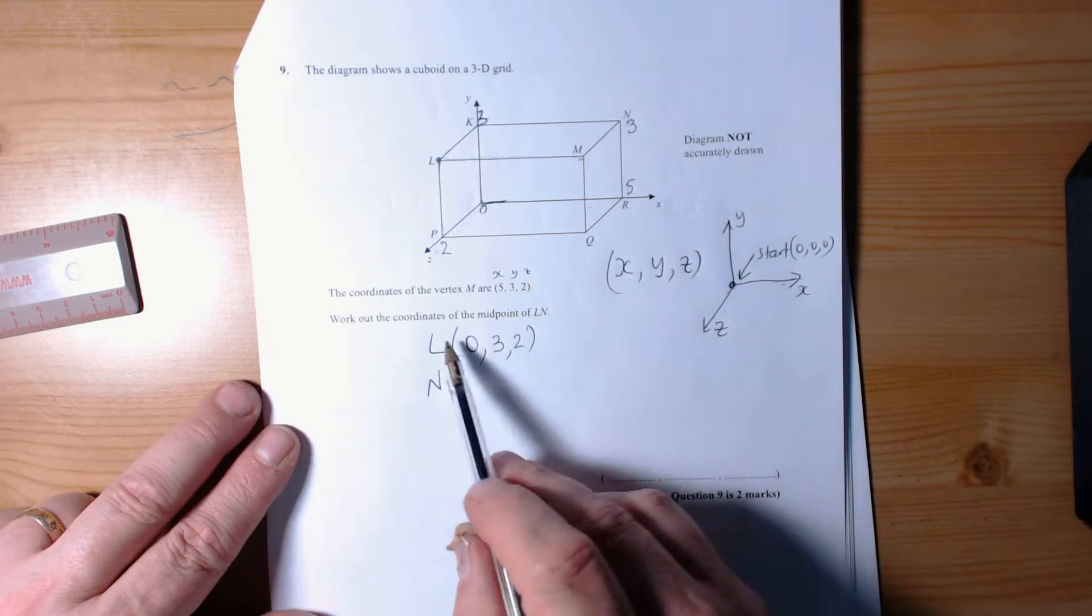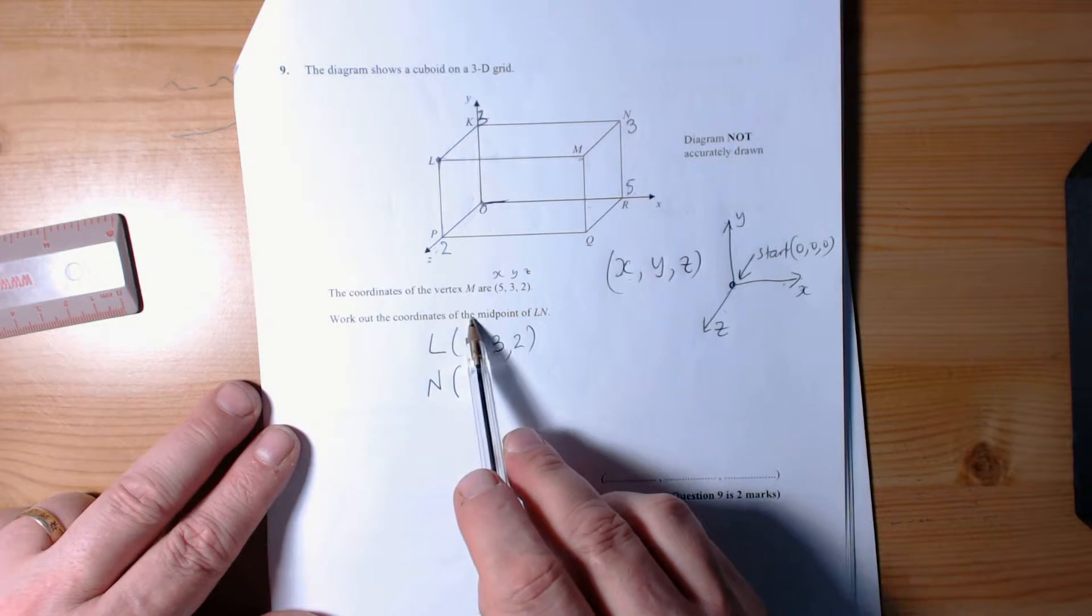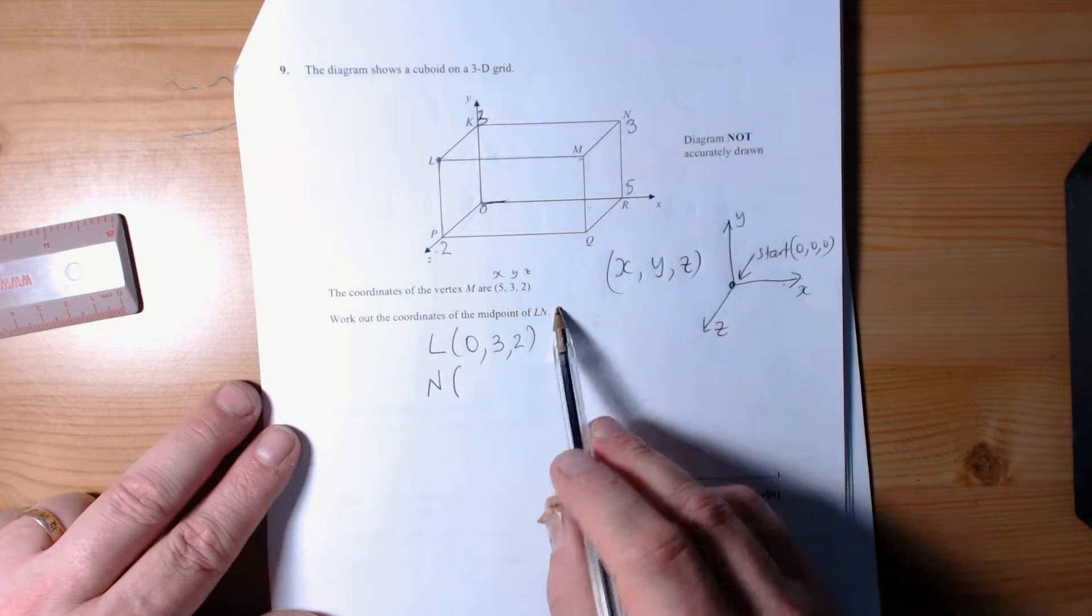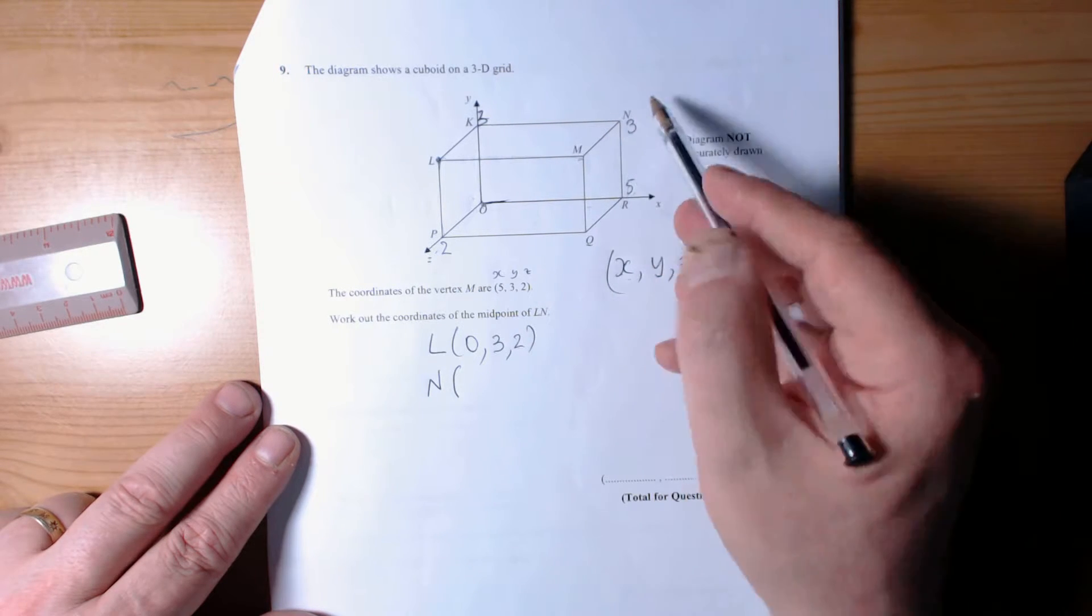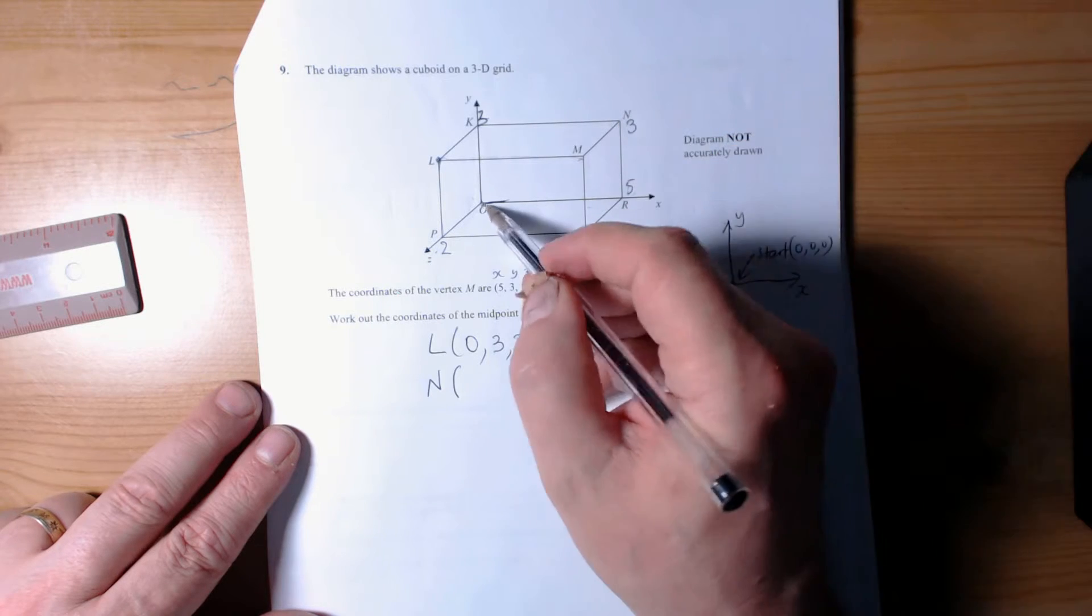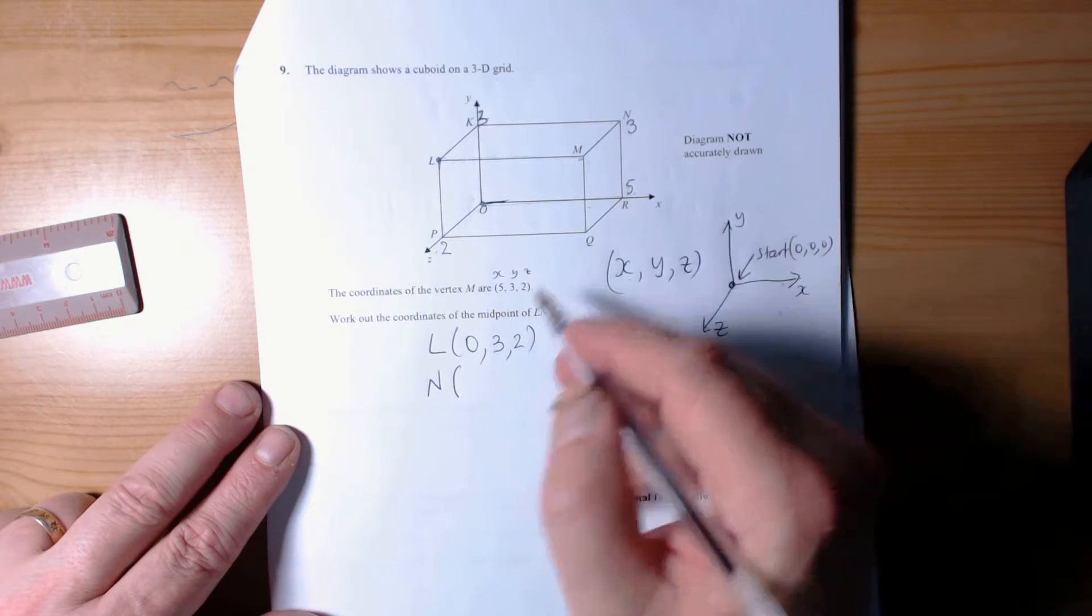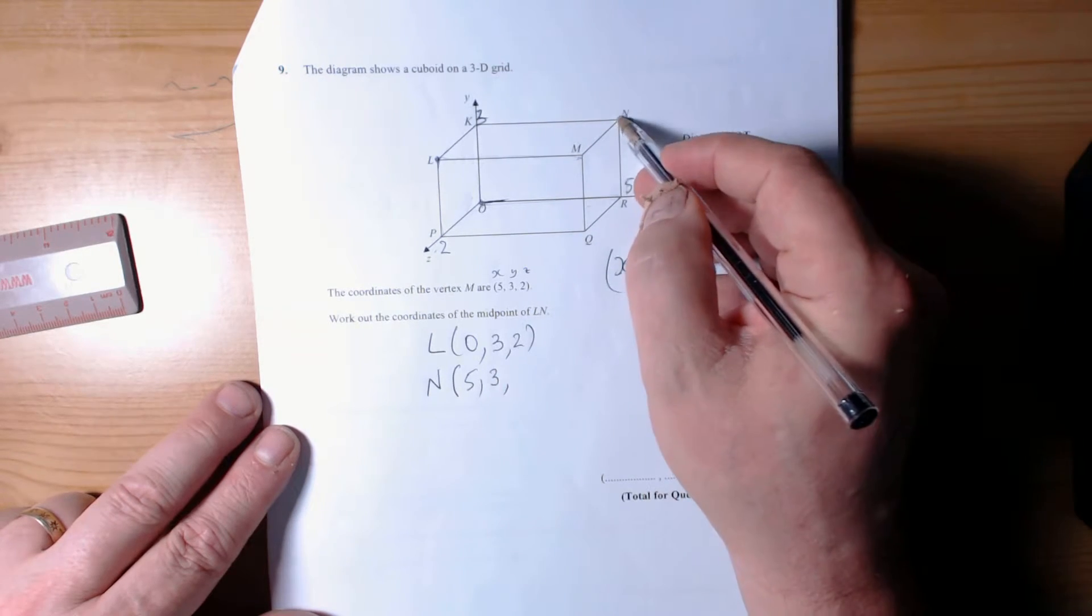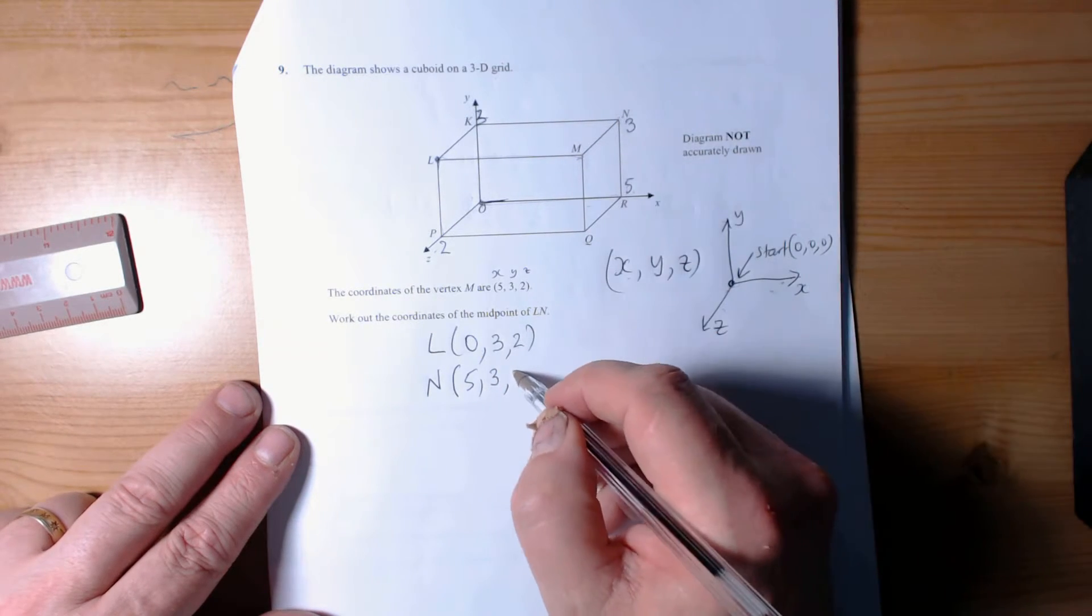We then get the coordinates for N and work out the midpoint of L to N. N is over here. To get to N, we come across, which is 5. We then go to the top of the box, which was 3, but we've not had to come forward to the front of the box, so the z-coordinate is 0.